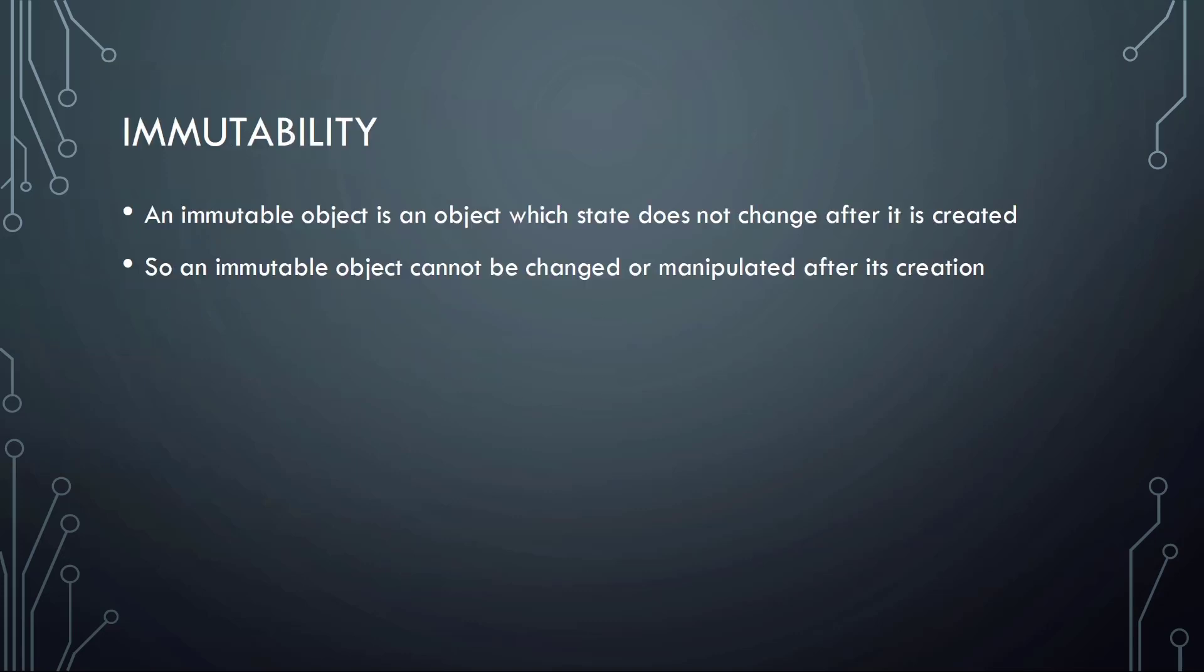Before we get more into detail about all these three types, let's first have a look at what immutability is. Two of the three types are immutable classes, and that means an immutable object or type is an object which state does not change after it's created. You cannot change or manipulate that object after its creation. So when an immutable string is created, you can't manipulate it, can't remove characters, add characters, split the string, and so on.